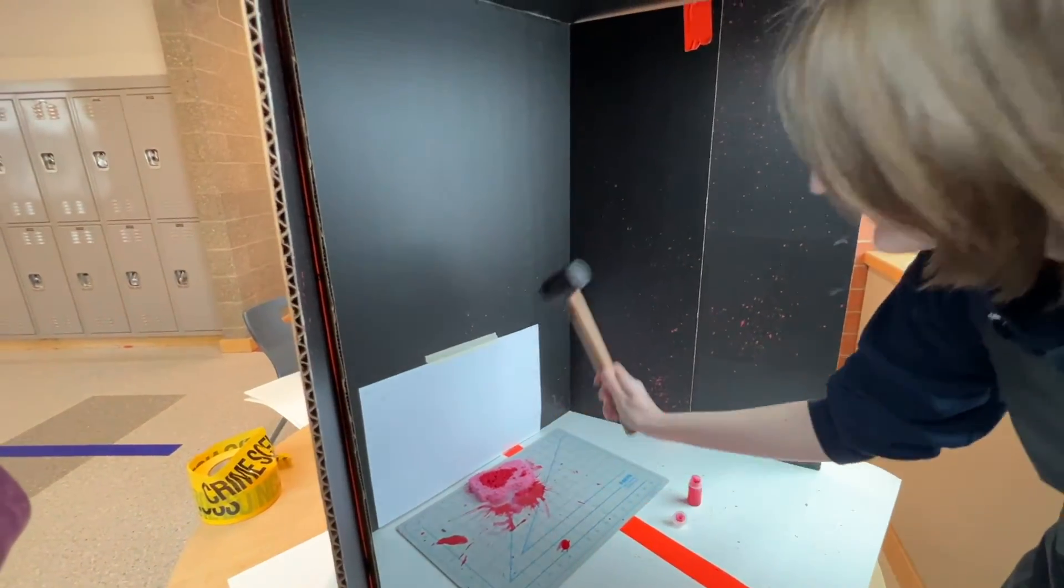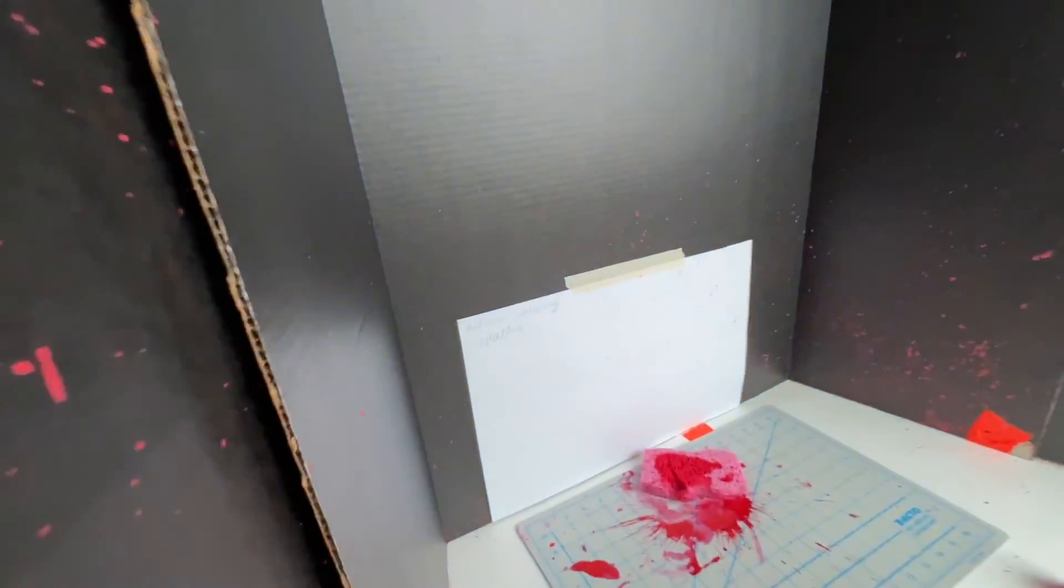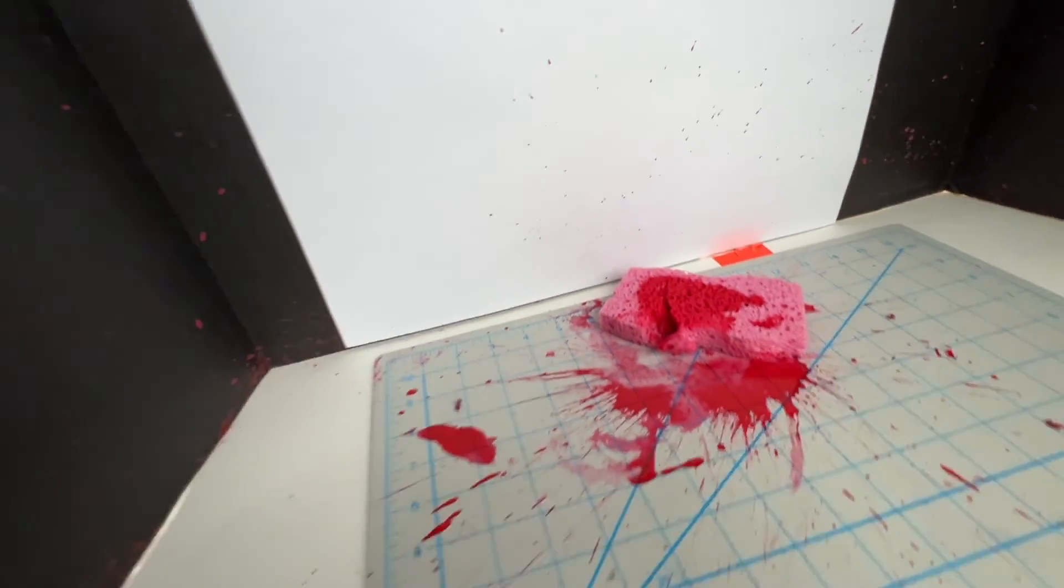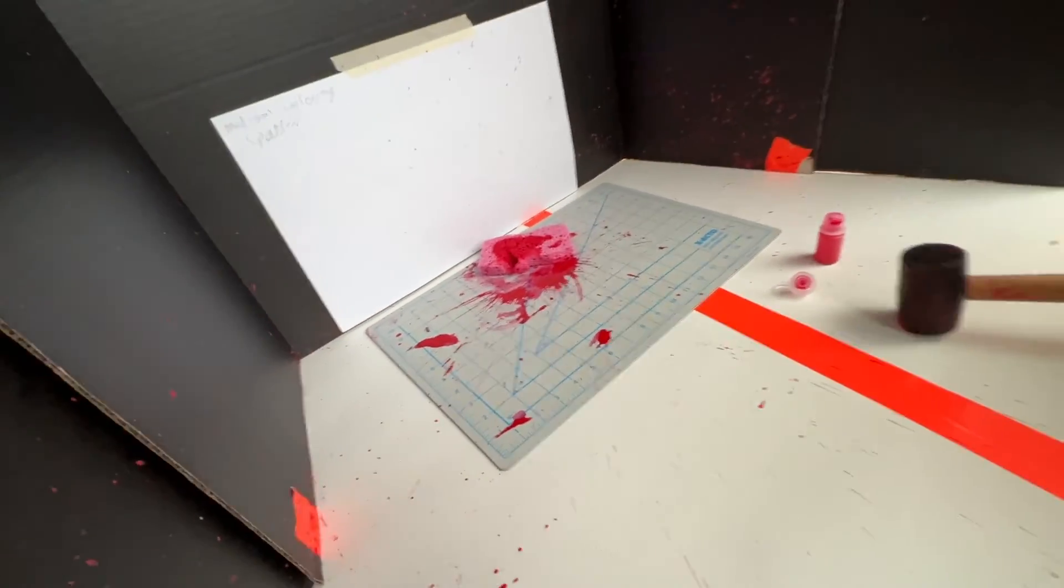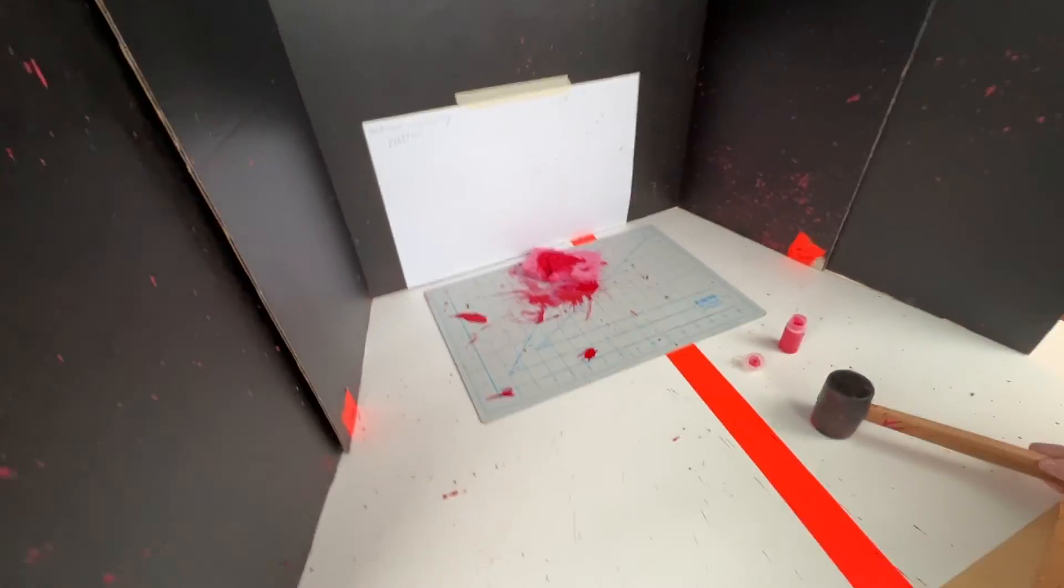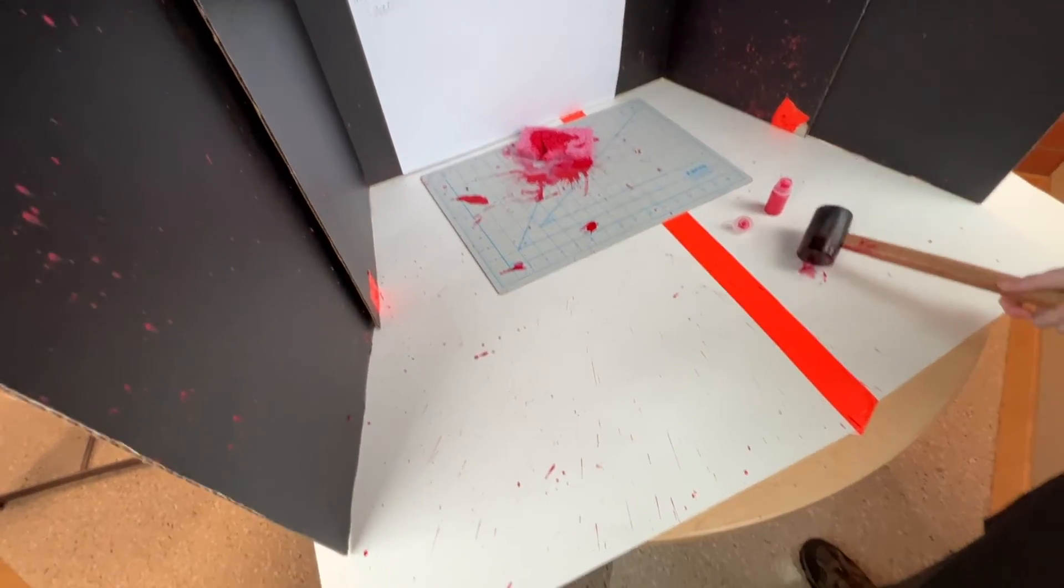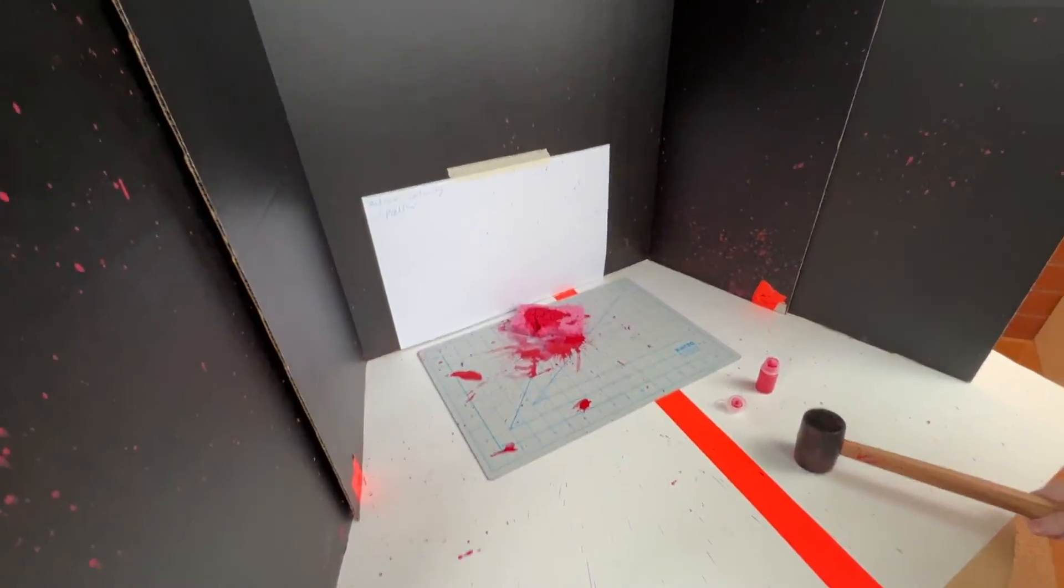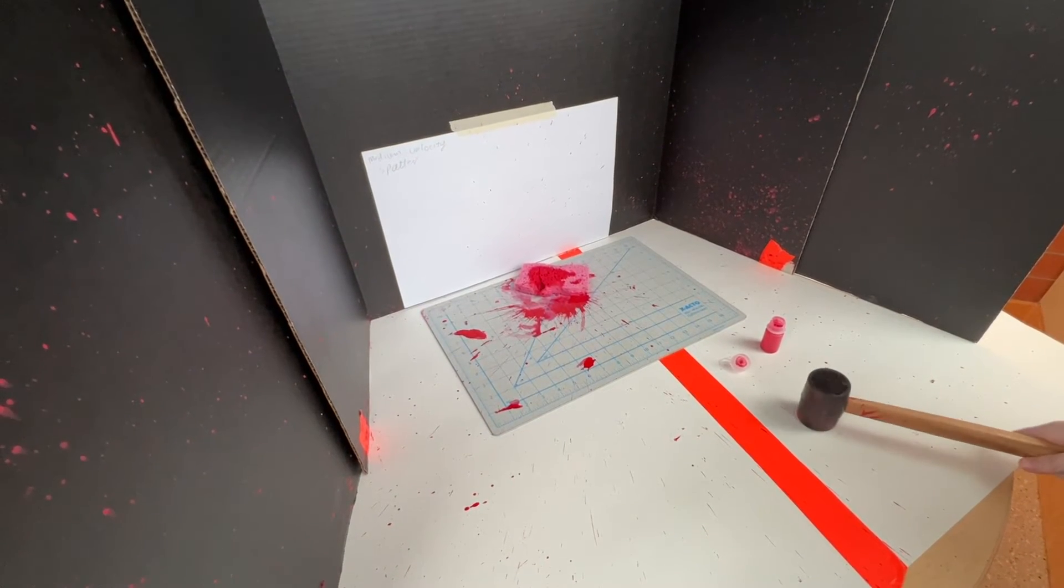Okay a little harder than that, oh that's better. So as you can see you get the blood spatter and you can see the tails and it's going in a specific direction. Yes the sponge will be decimated after about three blows and that's okay we have more sponges and you must clean up when you are done.